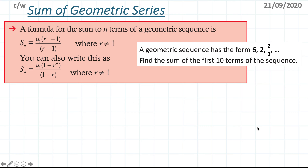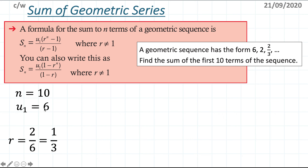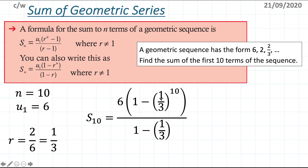For the second example, I have another geometric sequence. The first step is to identify all values: n = 10, u1 = 6, and the common ratio r = 2 divided by 6 = 1/3. Be careful not to use the decimal value since 1/3 is a recurring decimal — always use the fraction form to keep the answer accurate.